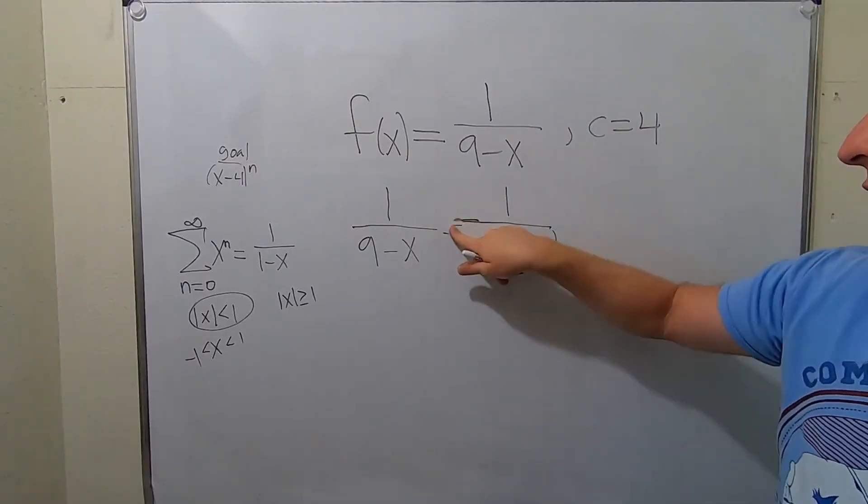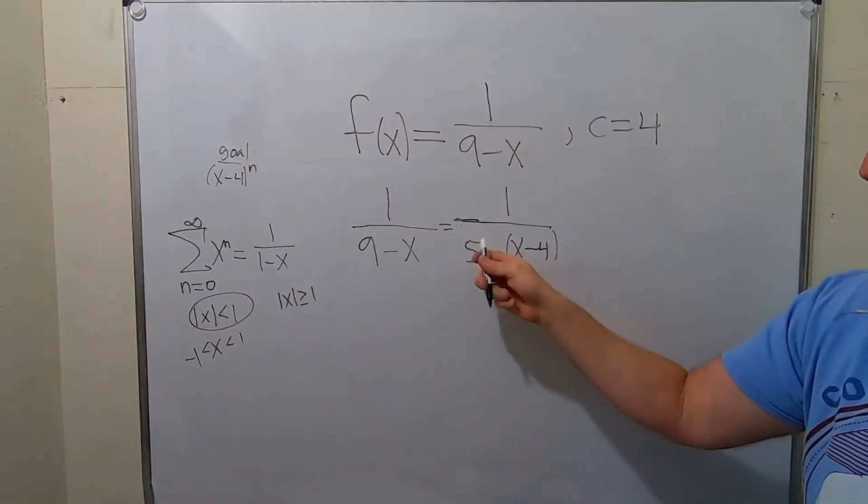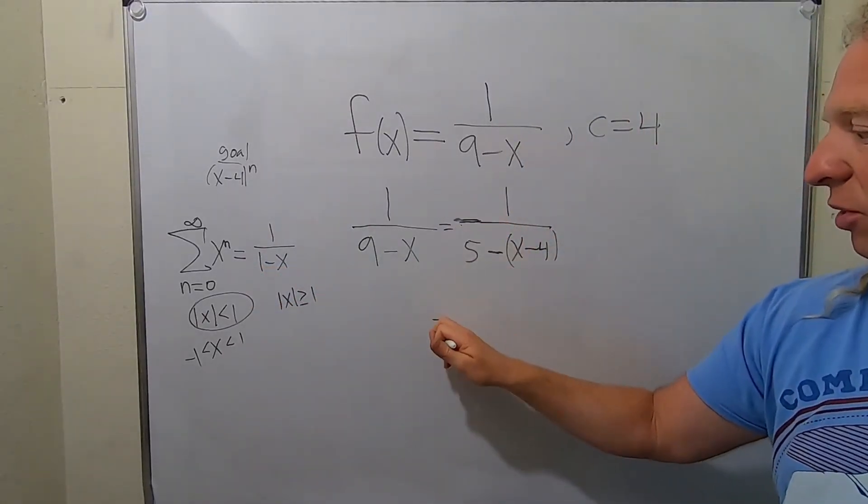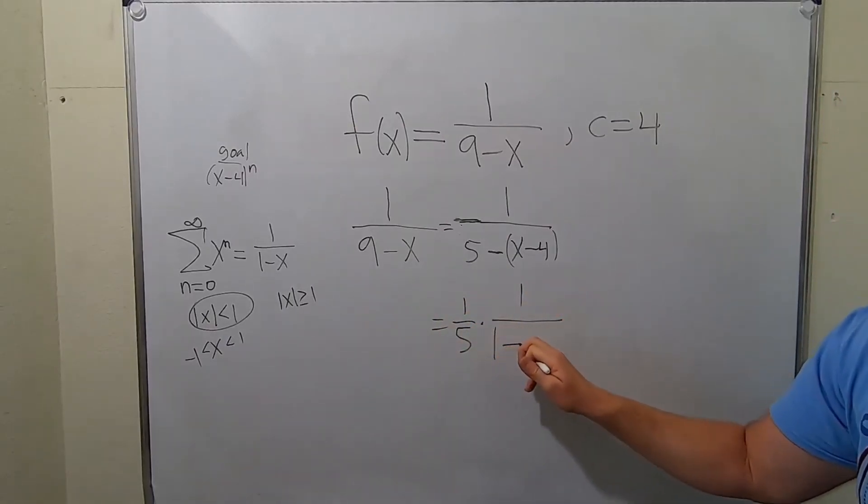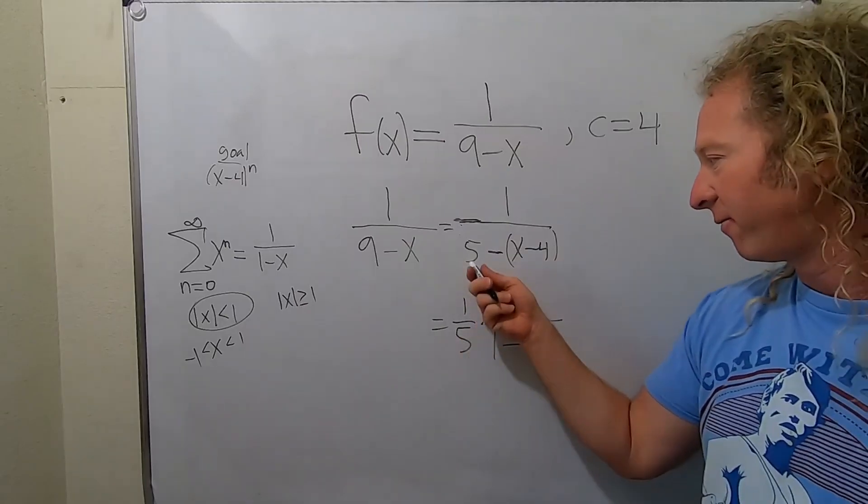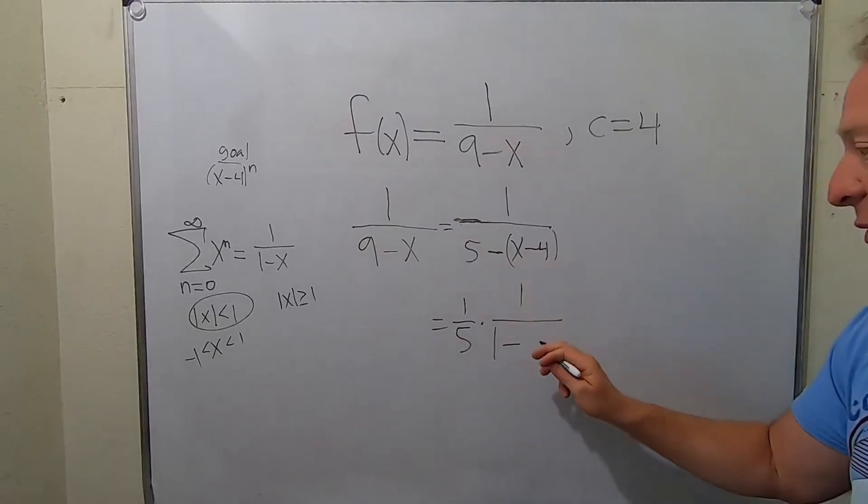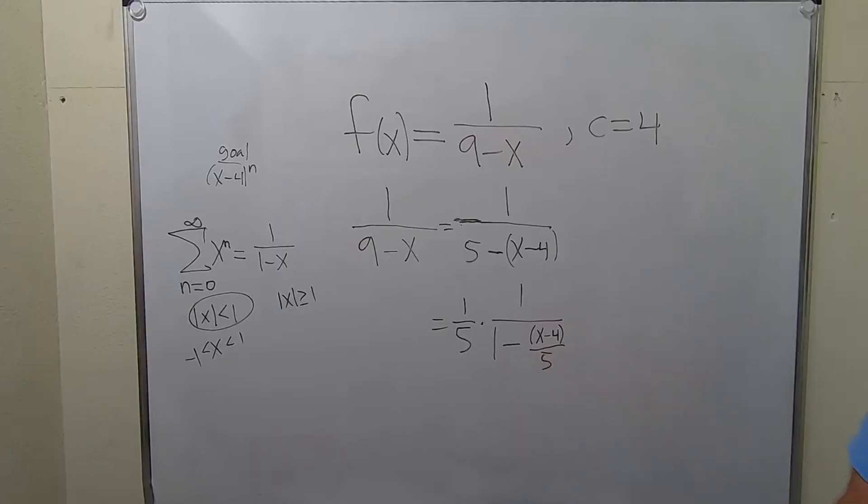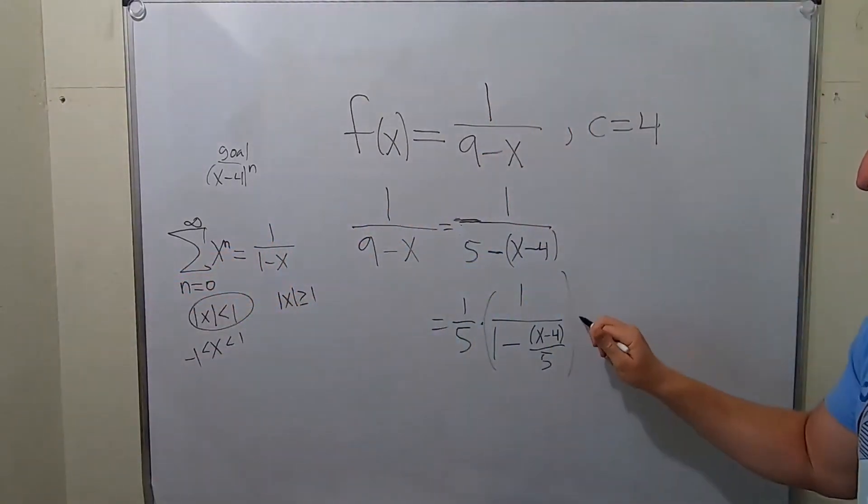We're almost there. In order to match this formula that's on the board, we need a 1. So we need this to be a 1. So in order to make this a 1, what you do is you pull out 1 fifth. So you have times 1 over 1 minus. So pulling out 5 from the 5 is easy. Because 5 times 1 is 5. But from here, again, requires a little bit of finesse. That's beautiful. That's what that is. Because look, 5 times this gives you this.